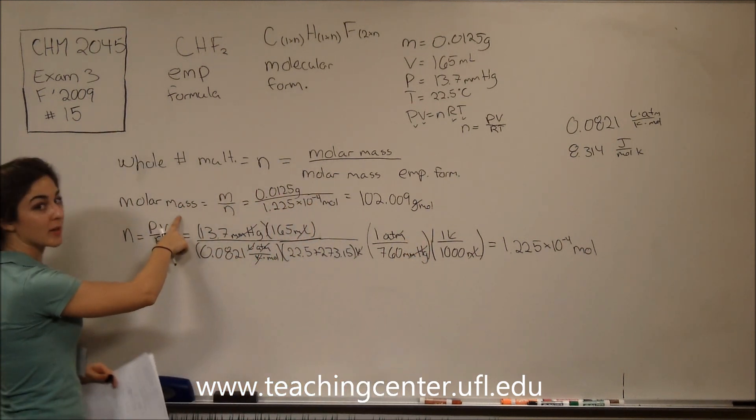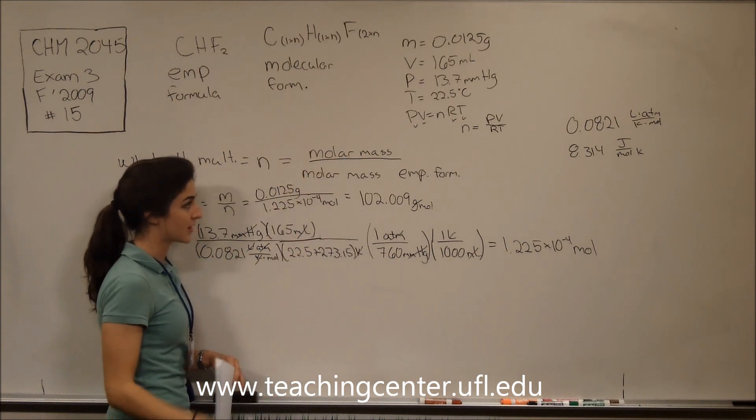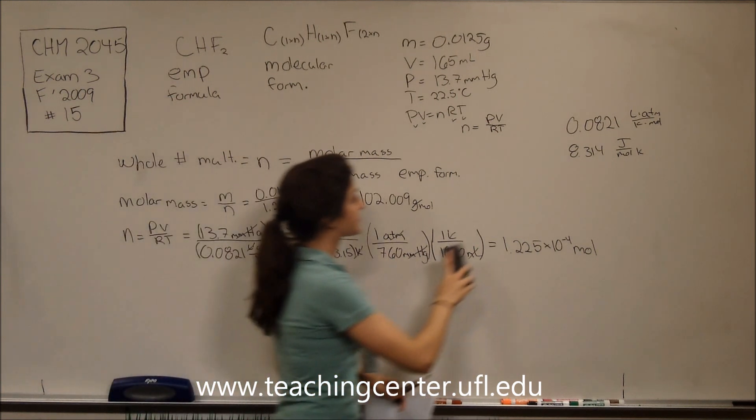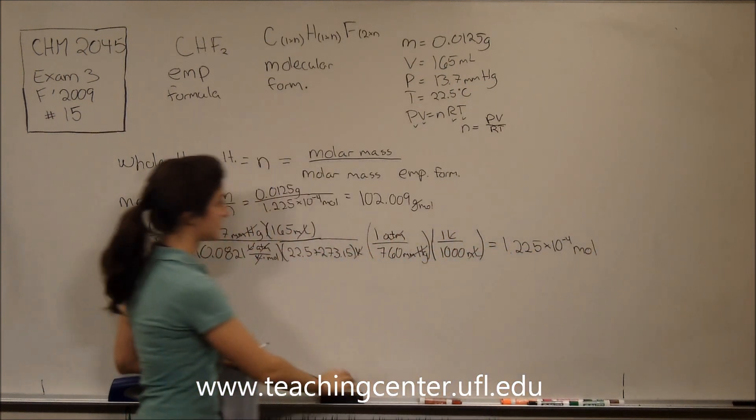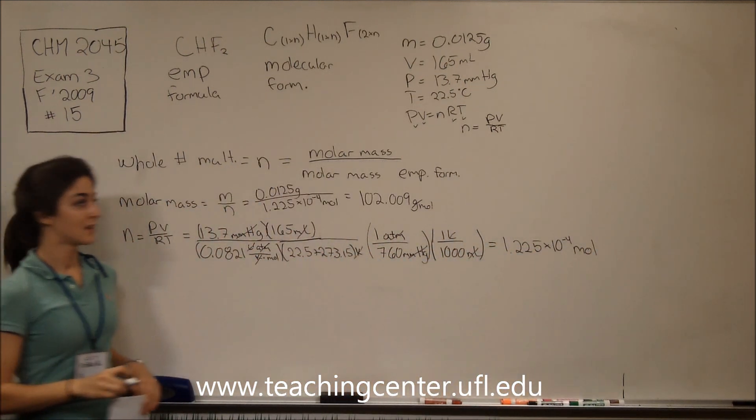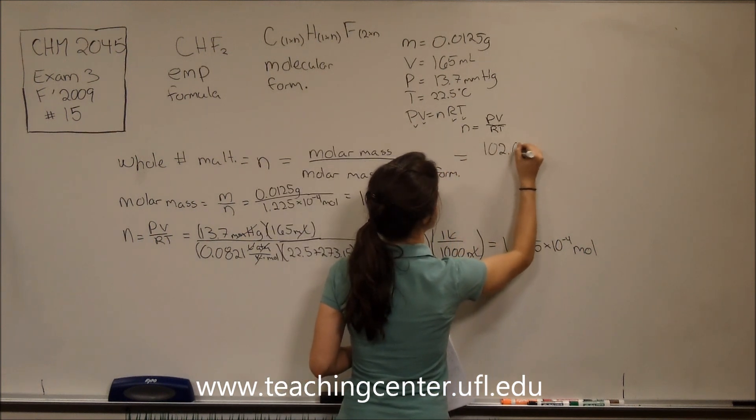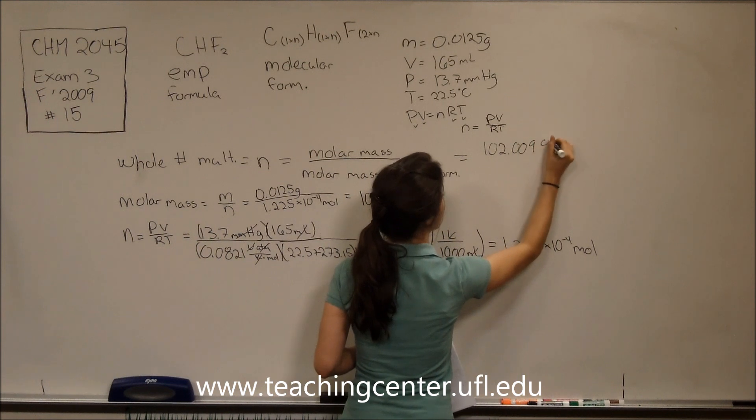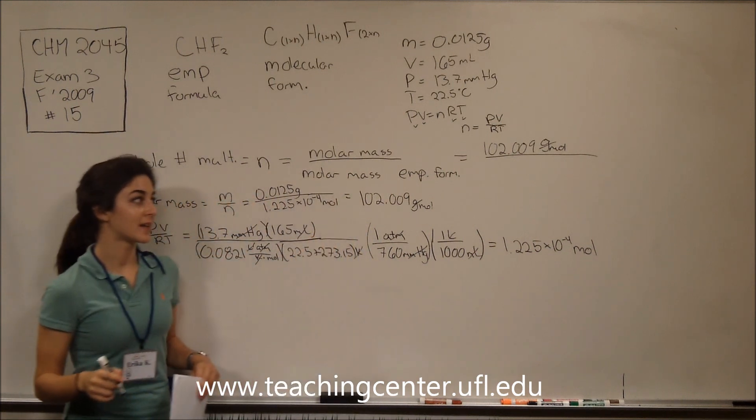So now that we have the molar mass, we can plug this into the top part of our equation over here. So we have 102.009 grams per mole, all over the molar mass of the empirical formula.